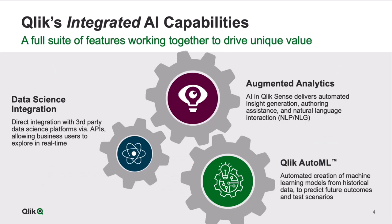Qlik really offers the most complete set of AI capabilities available in an analytics platform. This includes our automated analytics capabilities in Qlik Sense, our AutoML capabilities, as well as data science integration. Augmented analytics is really everything we do in our analytics experience — that includes automated insight generation, natural language processing and generation, as well as various forms of assistance from AI. AutoML is really about giving analytic teams the ability to add predictive analytics: the automated creation of models and predictive analytics with explainability to predict future outcomes, so that you can drive better action.